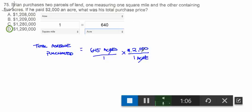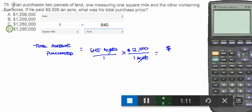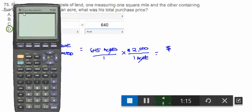Acres cancel and we're left with just money. So we're grabbing a calculator and we're simply going to turn it on. 645 times 2,000. One million two hundred and ninety thousand. One million two hundred and ninety thousand dollars.